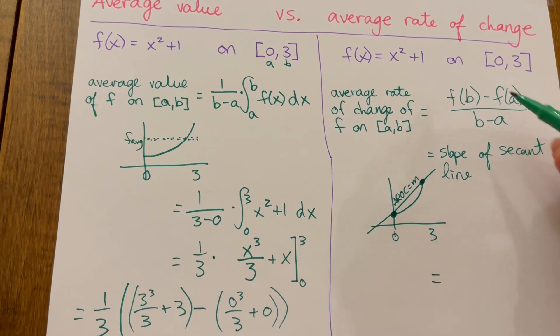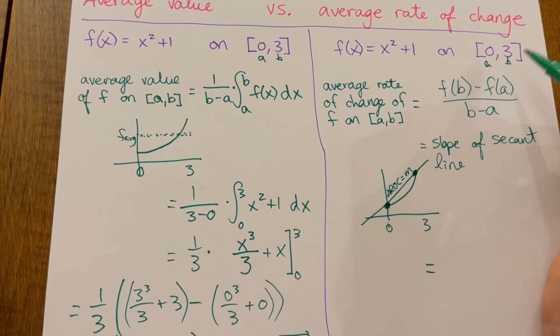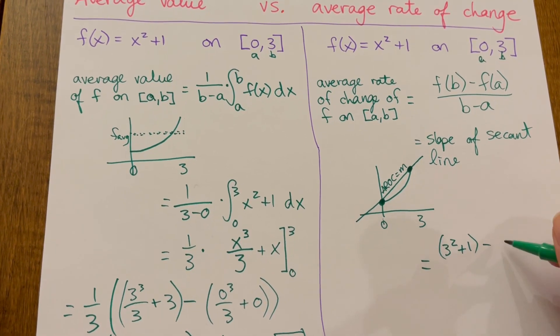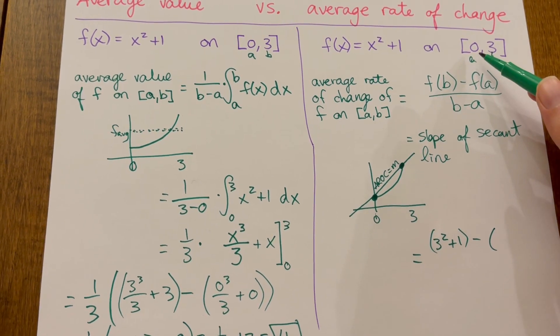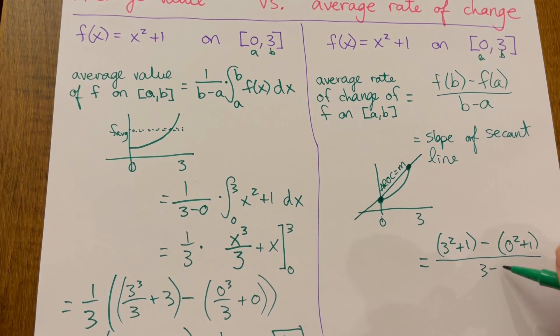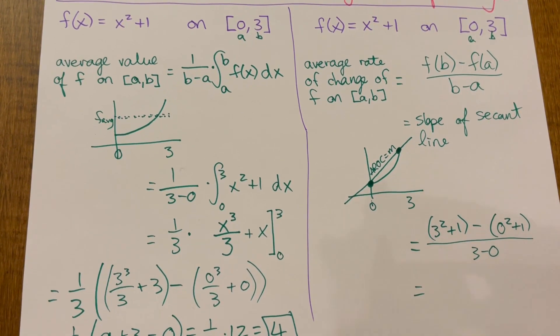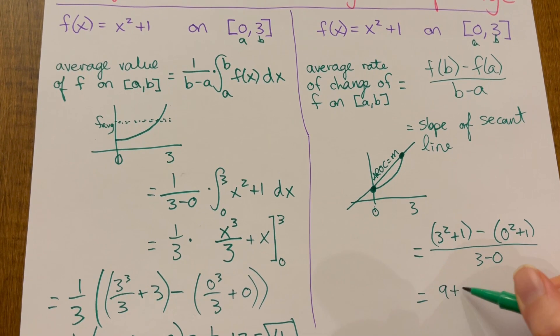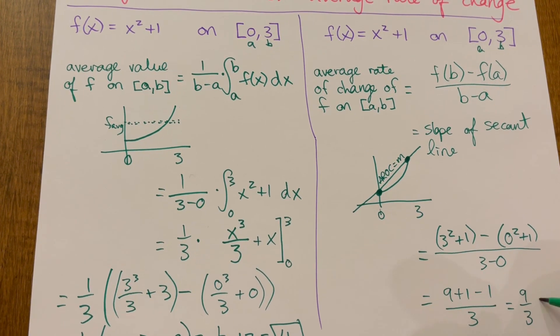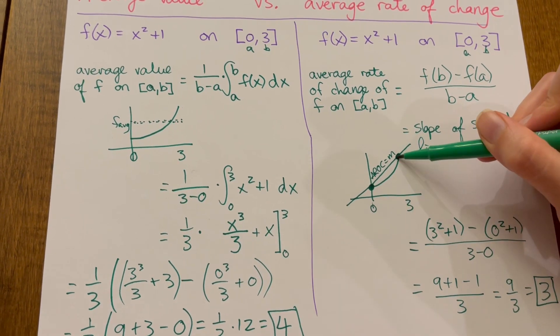We can calculate it out in this particular case: f of b will be this function with your second value plugged in, so we'll have 3 squared plus 1, that's our f of b, minus our f of a is with zero plugged into our function, zero squared plus 1, over b minus a, 3 minus 0. Calculate that out carefully. Make sure to distribute that negative sign to both terms. We'll have 9 plus 1 minus 1 over 3. And that simplifies out to 9 over 3, which is 3. That'll be the slope of that secant line connecting the end points of that curve.